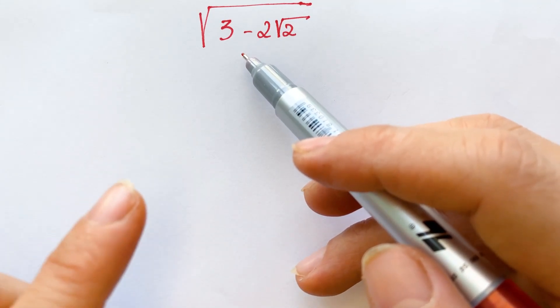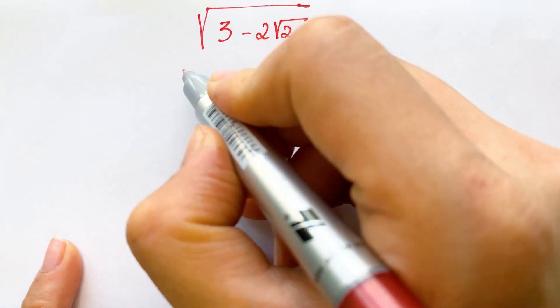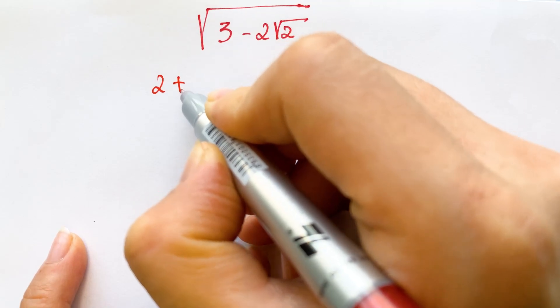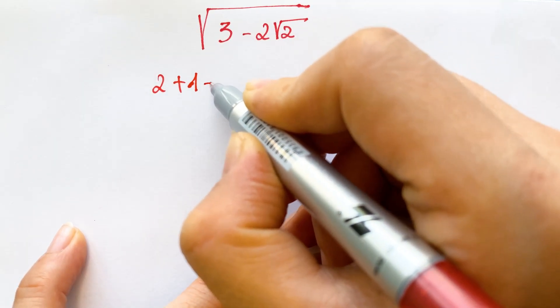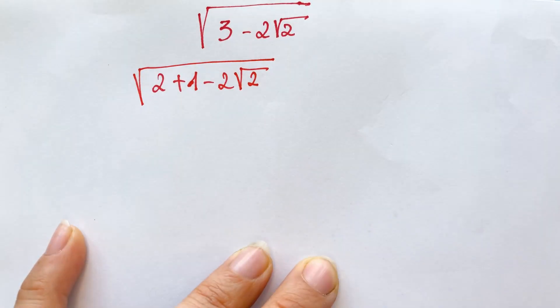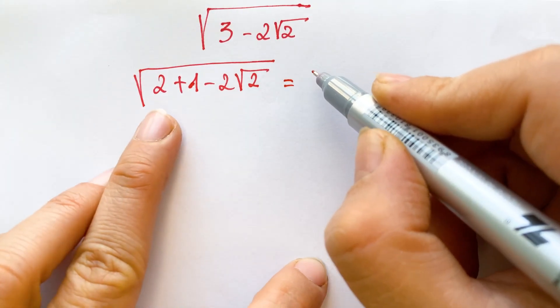It's a matter of thought. You can see three, you can break it down to two plus one, minus two square root two.